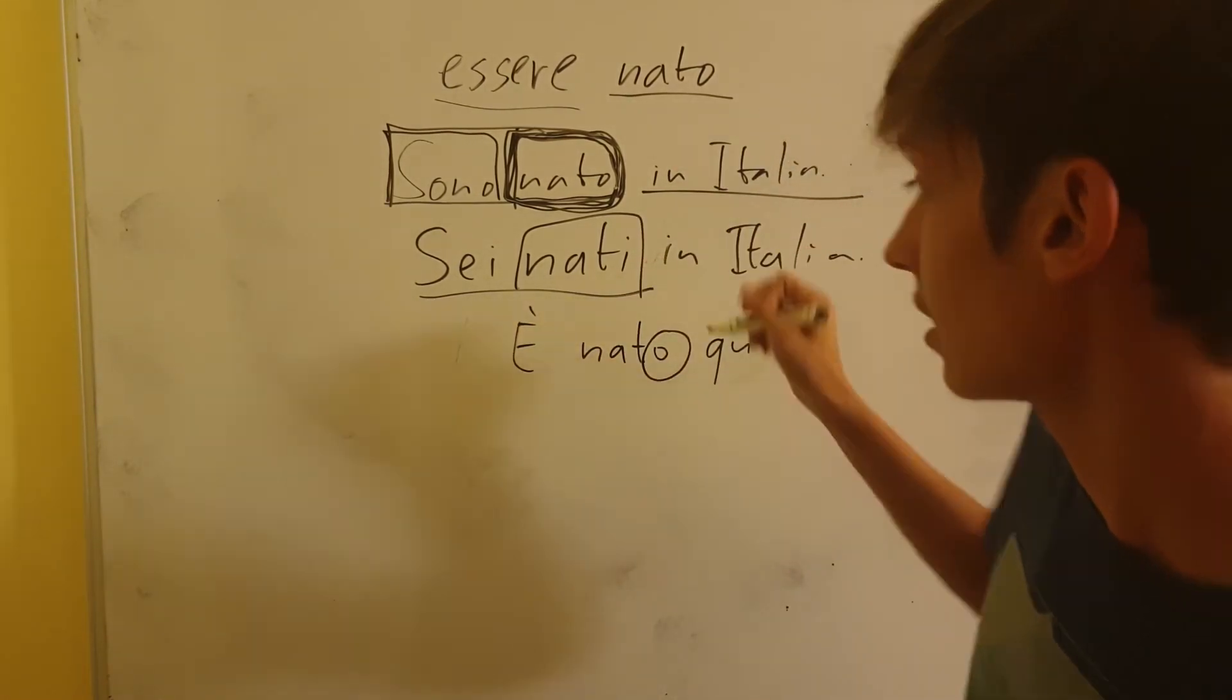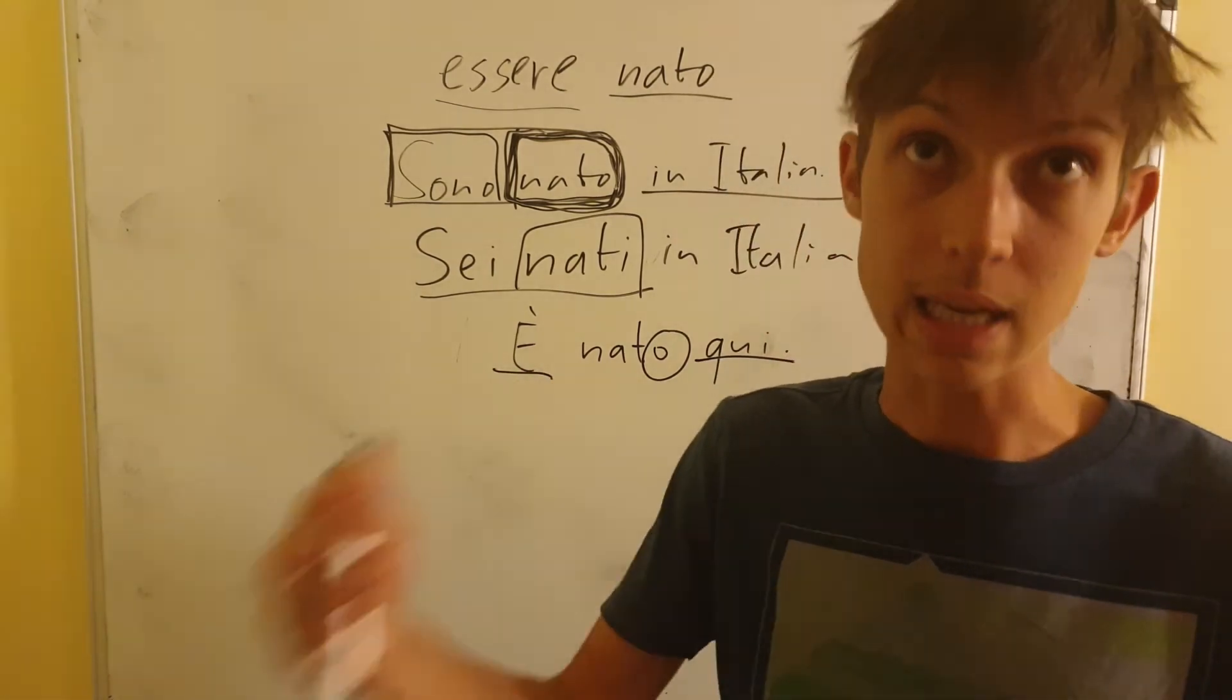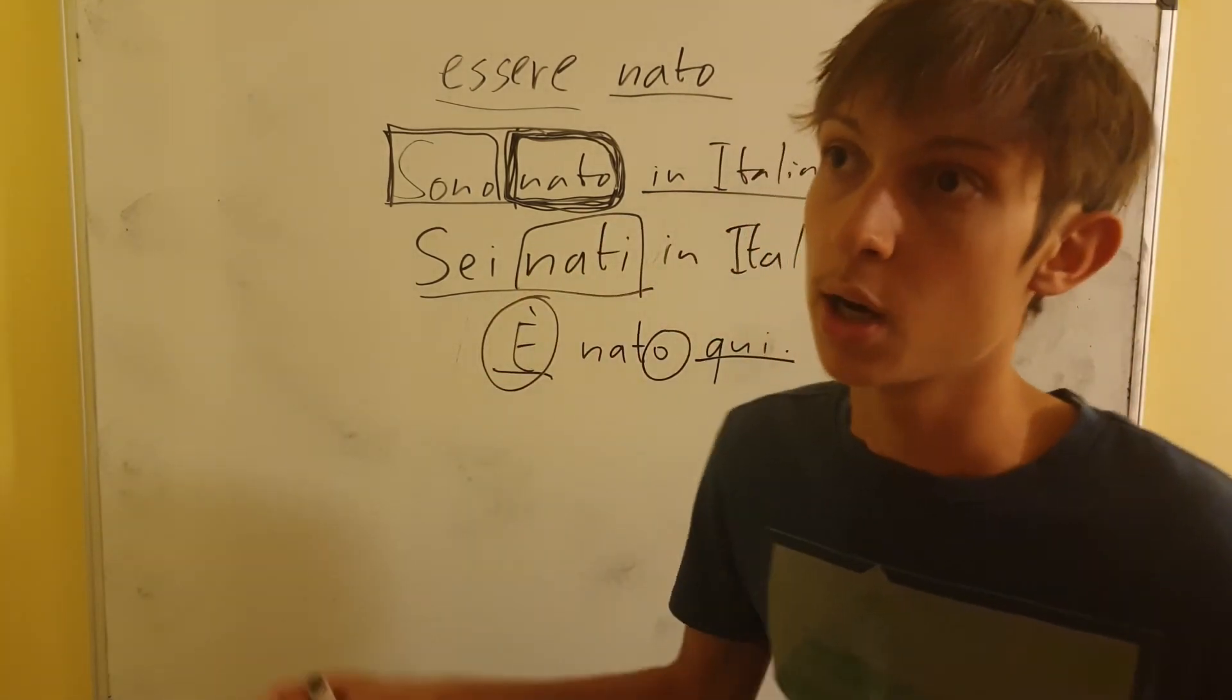So nato qui means he was born here. Qui means here. È is is, because this is the helping word, this is the helping to be.